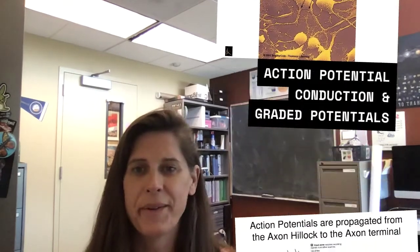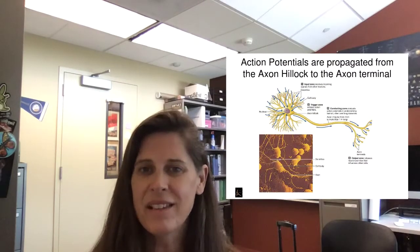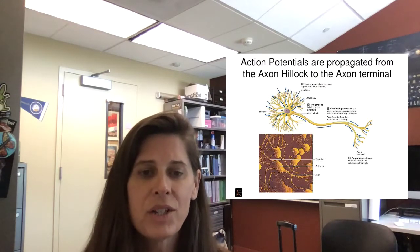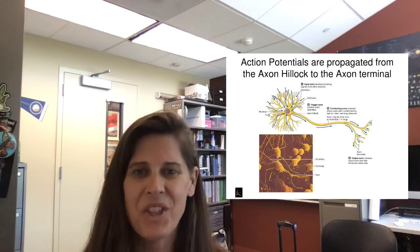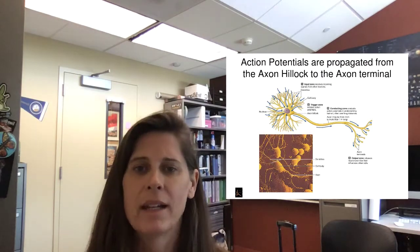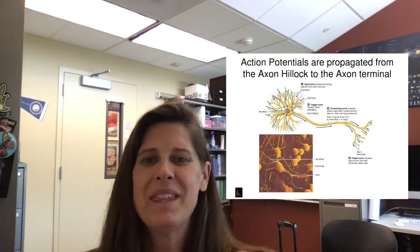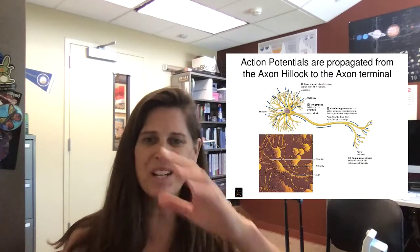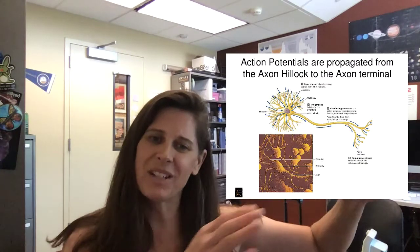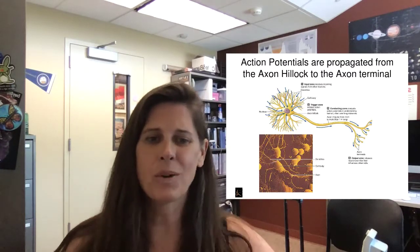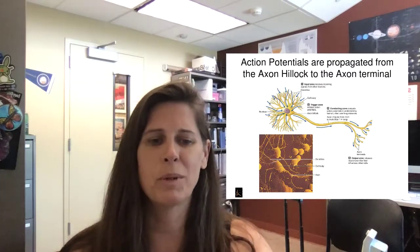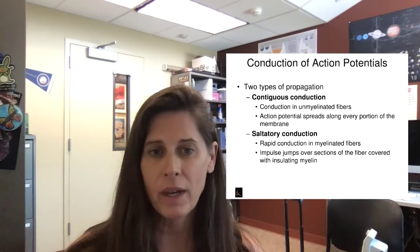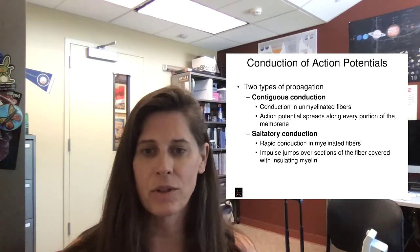In the last lecture we learned how action potentials are propagated down the cell membrane and the axon portion of the neuron. Now we're going to look at the method of conduction down the axon itself — so once the action potential is generated, how is it actually moving toward the axon terminals?